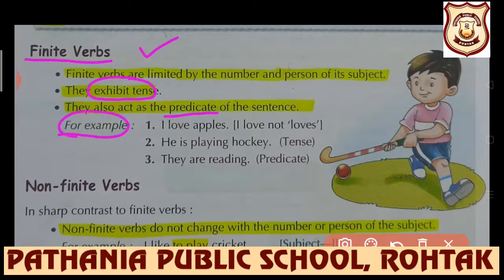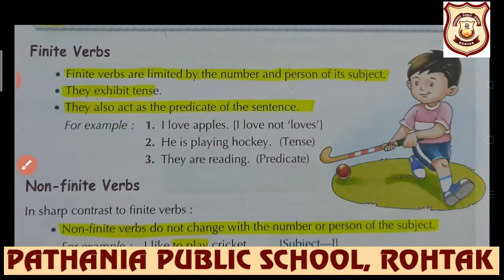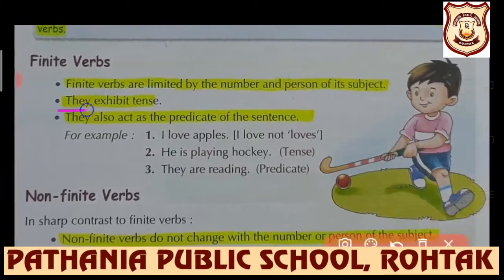Let's see the examples: 'I love apples' - not 'loves', because with 'I' and 'you' we use plural forms. 'He is playing hockey' - this is denoting present continuous tense. 'They are reading' is in the predicate part. So finite verbs exhibit tense and also act as the predicate of the sentence.